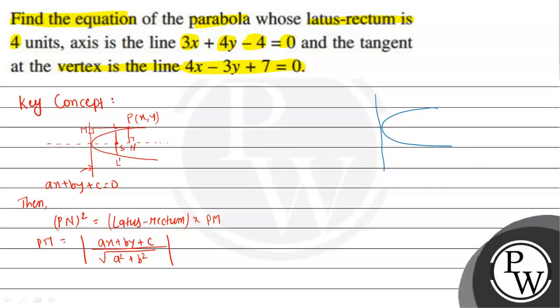The tangent equation is given by 4x - 3y + 7 = 0. Consider a point P on this parabola. From P we draw a perpendicular to the tangent at M, and from P we draw a perpendicular to the parabola's axis at N.